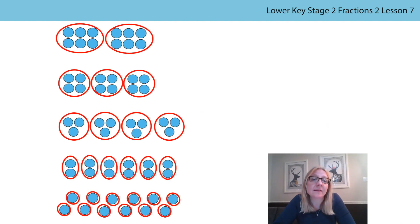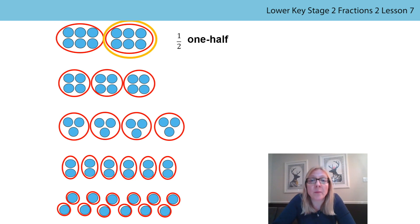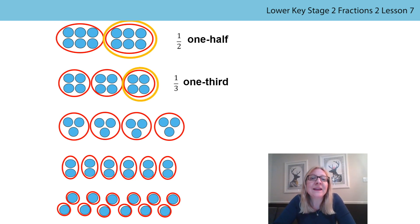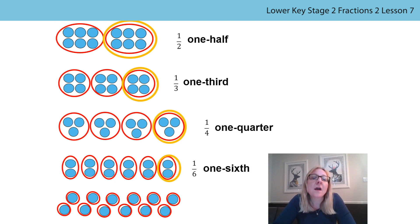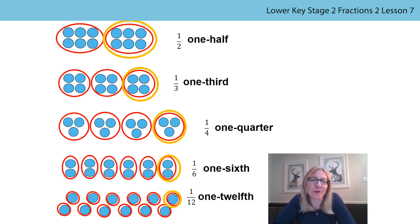Let's summarise. This is how we divided twelve into two equal parts to make halves, three equal parts to make thirds, four equal parts to make quarters, six equal parts to make sixths and twelve equal parts to make twelfths.